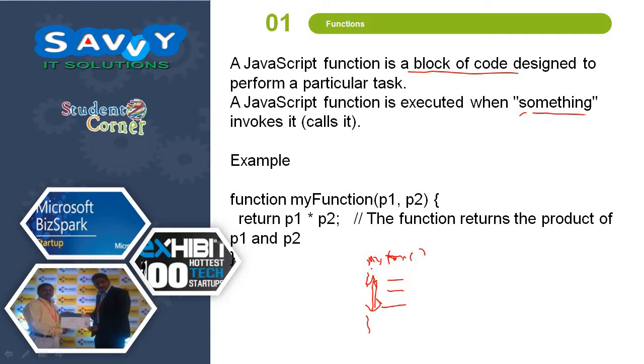We need to call or whenever we are using, I call like this. These are the examples. When I am calling it, automatically the control moves to here and execute it. Similarly, second time I call it, again, second time also, the call will be invoked. This is the way the function will be working out.